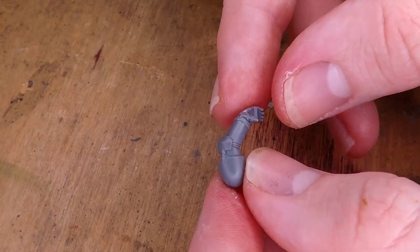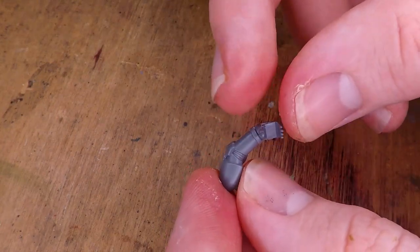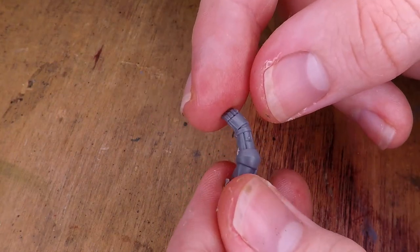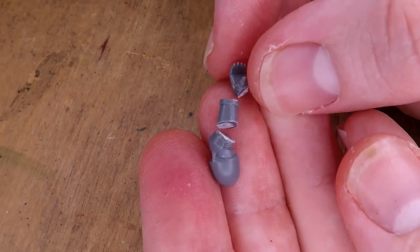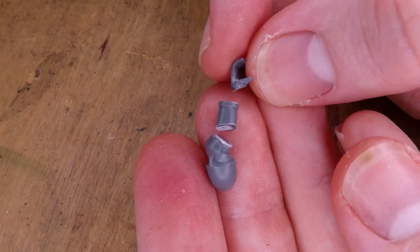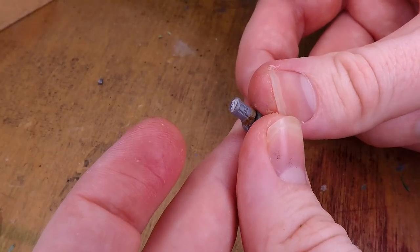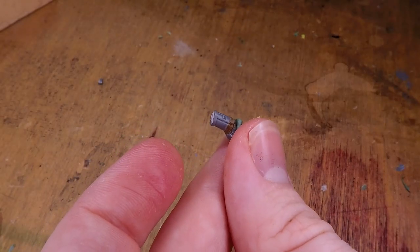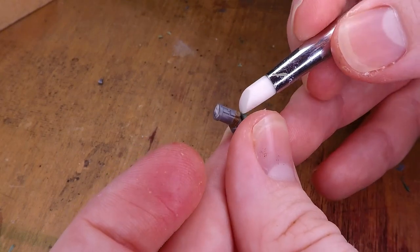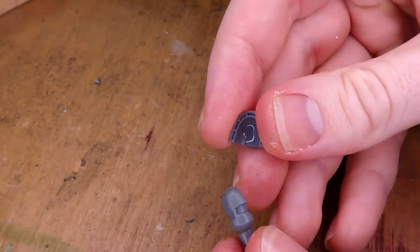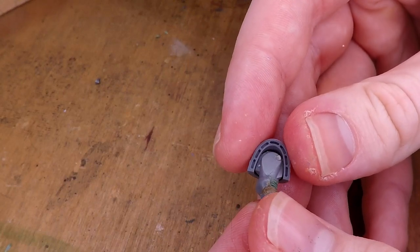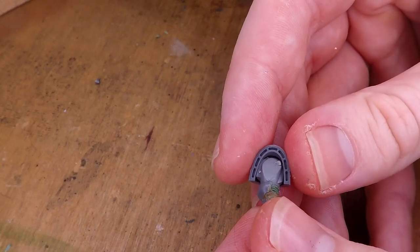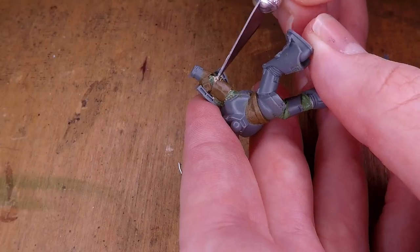I then start working on the other arm for this first figure, chopping that up in the same way that we've done for all the other parts that we're changing here. Again, this one needs to be straighter than it obviously is. So after fixing the cut up with a little bit of Milliput, which unfortunately I forgot to film, I take some green stuff and start assembling the arm. This time I didn't have to make half of the arm out of green stuff. I just reused the bicep from the arm that we had chopped up.